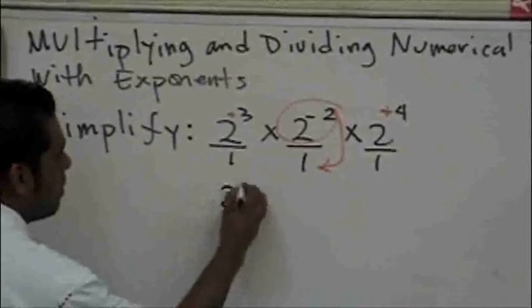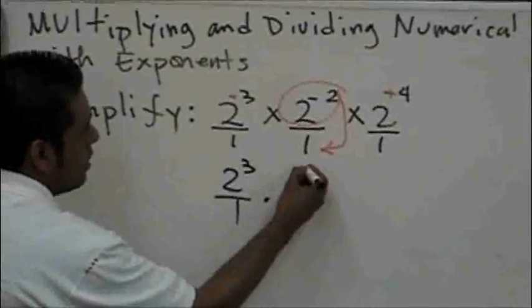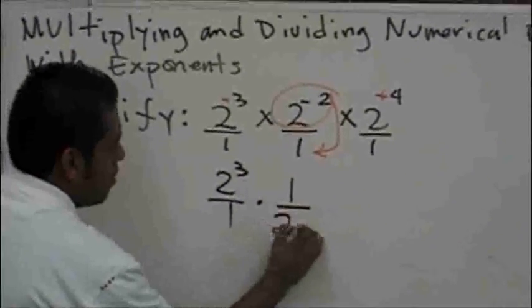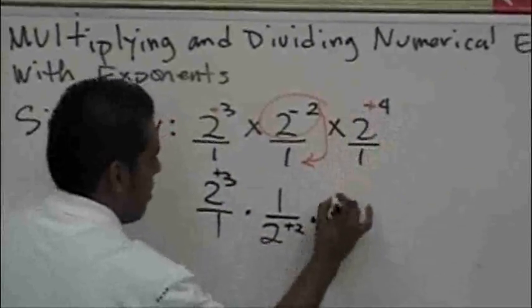So I start with the first one, this remains the same. I simplify the second one, this becomes one over two to the positive two power, and then the last one remains the same.